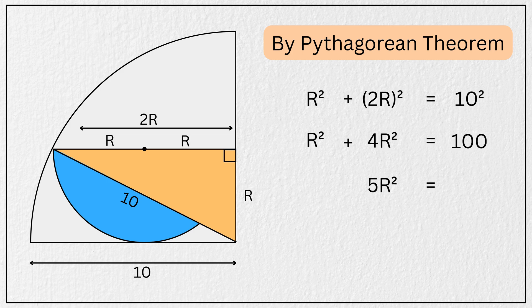Or 5r squared equals 100. Now, dividing both sides by 5, we get r squared equals 20.